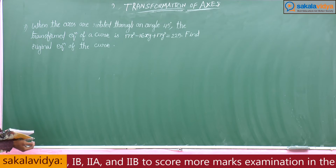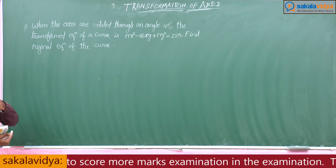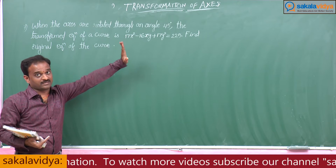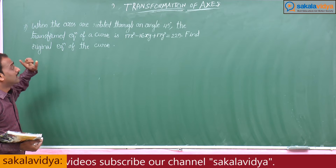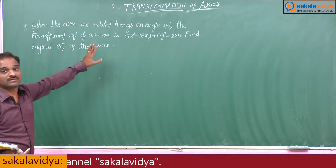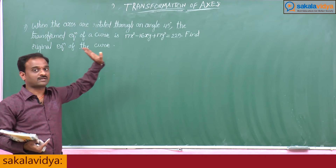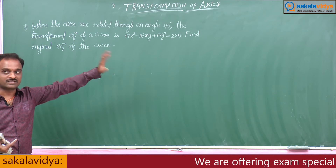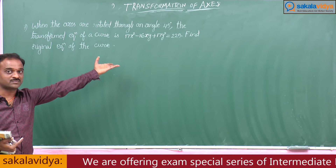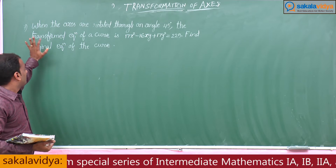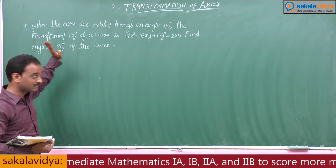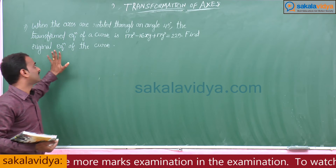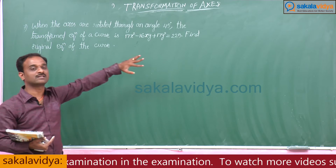Comparing with the previous problem, the difference is: in that problem the given equation was the original equation and we found the transformed equation. But in this case, the given equation is the transformed equation and we have to find the original equation.